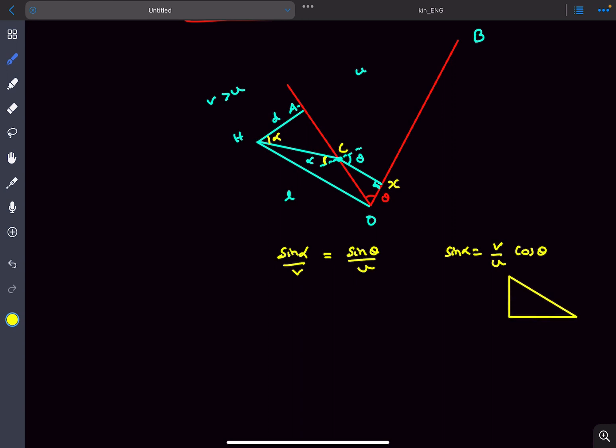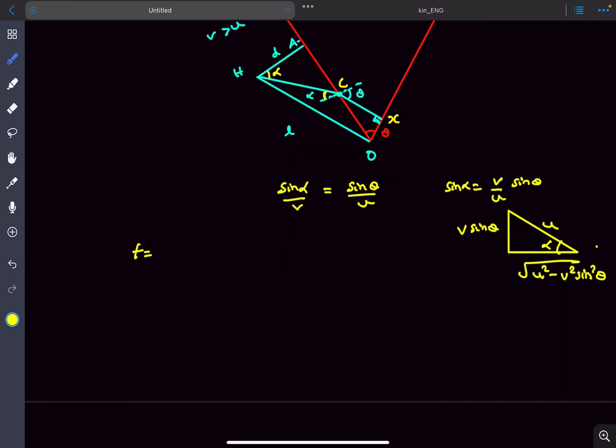If we draw a triangle with angle alpha, this side is sin theta, this is U, and this side is square root of U squared minus V squared sin squared theta. Now we find the time. Time will be HC divided by V plus CX divided by U. HC is D divided by cos alpha. From this triangle, cos alpha equals square root of U squared minus V squared sin squared theta divided by U, and this whole thing is divided by V.